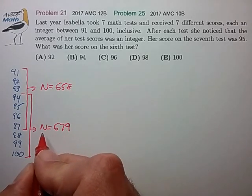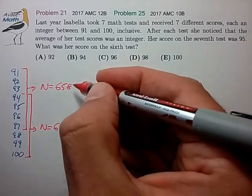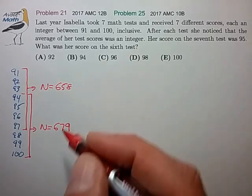And if the seven scores come from the seven highest available, sum those up, you get a total of 679. So n, the total of all seven scores, has to be somewhere in this range. That's a pretty good first step.